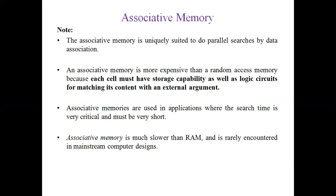Associative memory is more expensive than main memory because it has a cell to store the data along with a logic circuit implementing matching logic with an external argument. Not only does it store data, it also has logic — known as map logic — which is why associative memory is more expensive than random access memory.